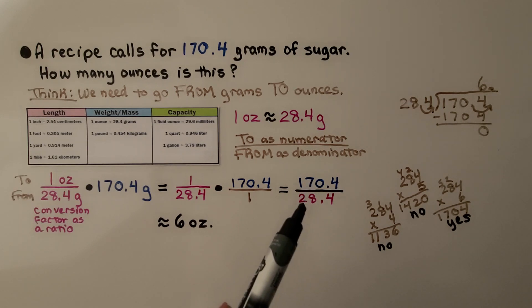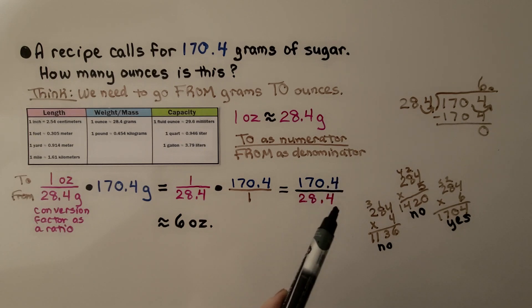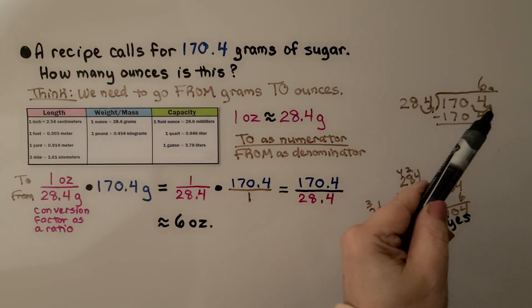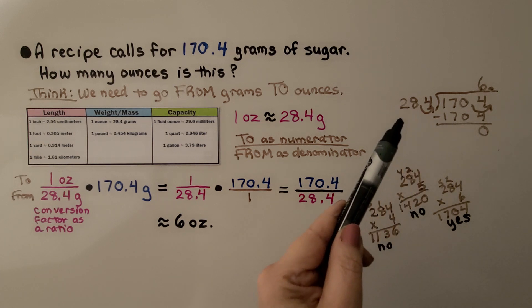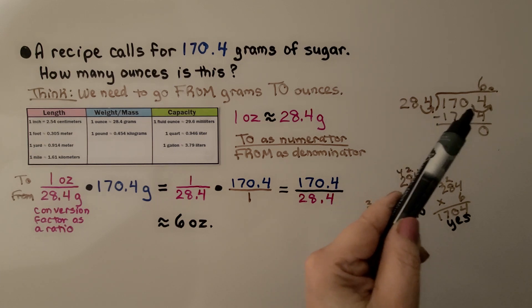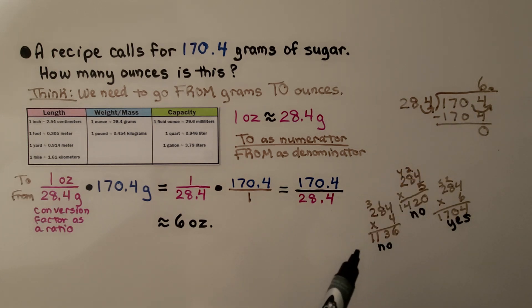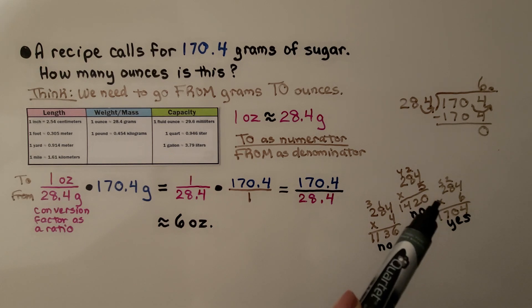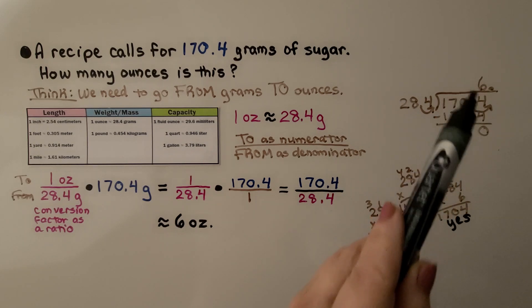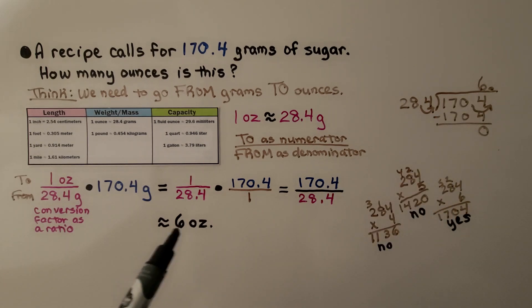We have to move this decimal point over 1, so we're going to move this one over 1. We see how many times 284 can fit into 1,704. We try multiplying it by 4, and that's not enough. We try multiplying it by 5, and that's not enough either. When we try multiplying 284 times 6, we see that it equals 1,704. So we know it's about 6 ounces. We have an approximation symbol, so we know it's approximately 6 ounces.